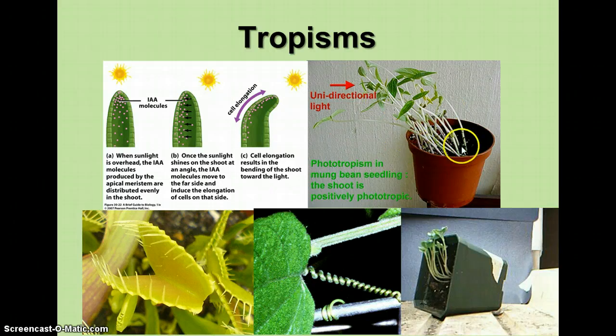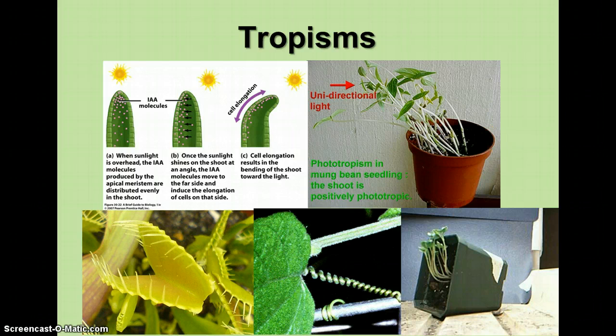When you leave a houseplant always facing the same direction toward a window, the plant is going to end up leaning one way. That's why with houseplants it's really important to continue turning the plant — a quarter turn every few days or so — to keep it developing evenly all the way around.